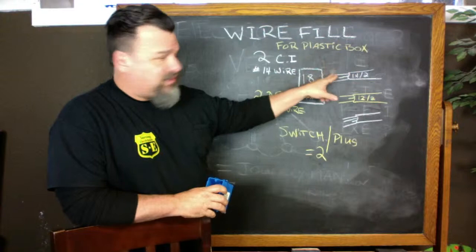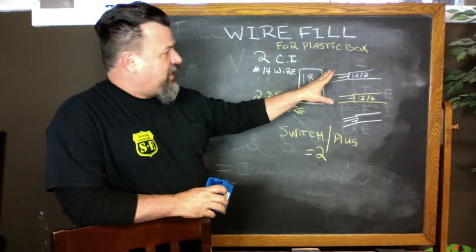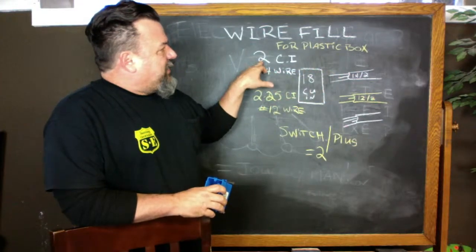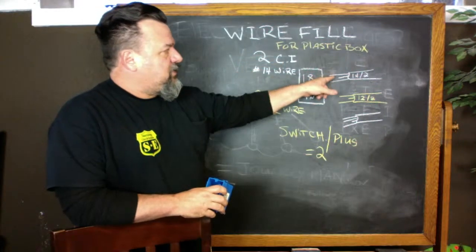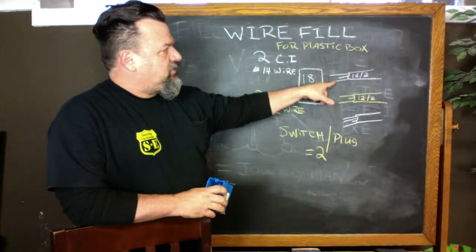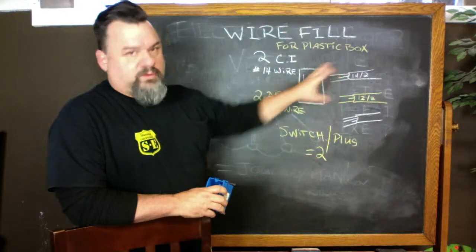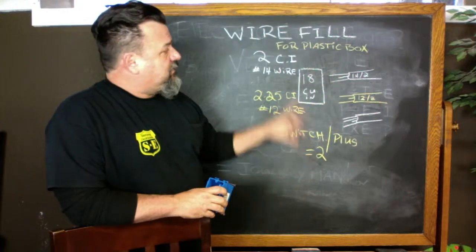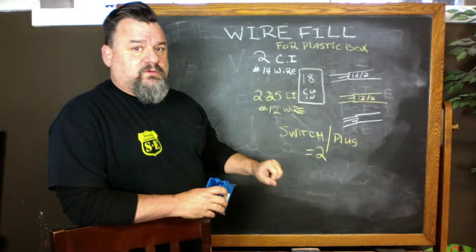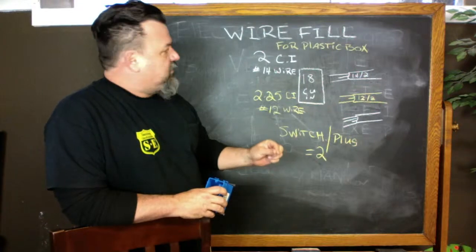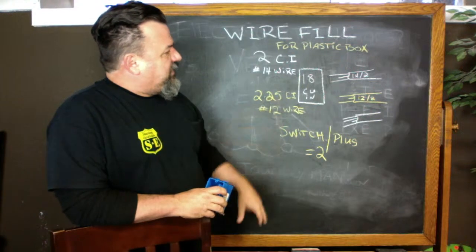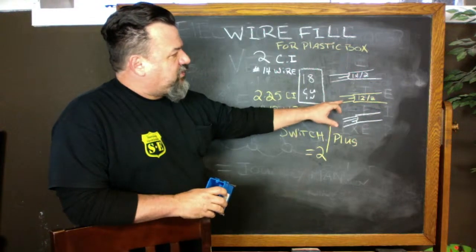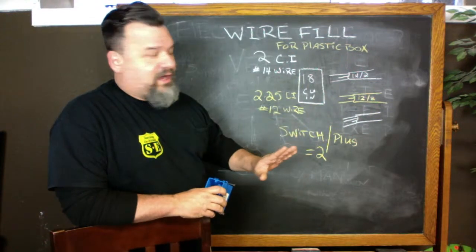And each one of these wires, it's got a black, white, and a ground. Now for the 14-2, number 14 gauge wire, each wire is rated at two cubic inches. Black wire's two, the white wire's two. We'll talk about the grounds here in a second. Now the 12-2, they're a little bigger. So they're going to take up more volume, right? So they're two and a quarter inches a piece, two and a quarter, two and a quarter. I'm not talking about the grounds yet.